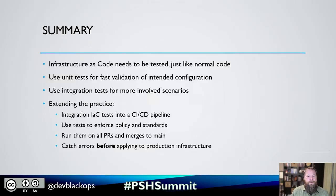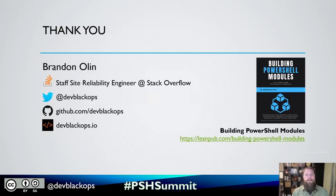The whole point of this is to catch errors before applying infrastructure into your production environment. Run these tests as you're developing and changing code via PRs, so you can have confidence that your infrastructure behaves and is configured the way you want it to. Thank you — that was the end of my presentation. My name is Brandon Olin; you can find me at DevBlackOps on Twitter, GitHub, or my blog at devblackops.io. Check out my book on LeanPub, and enjoy the rest of the summit.